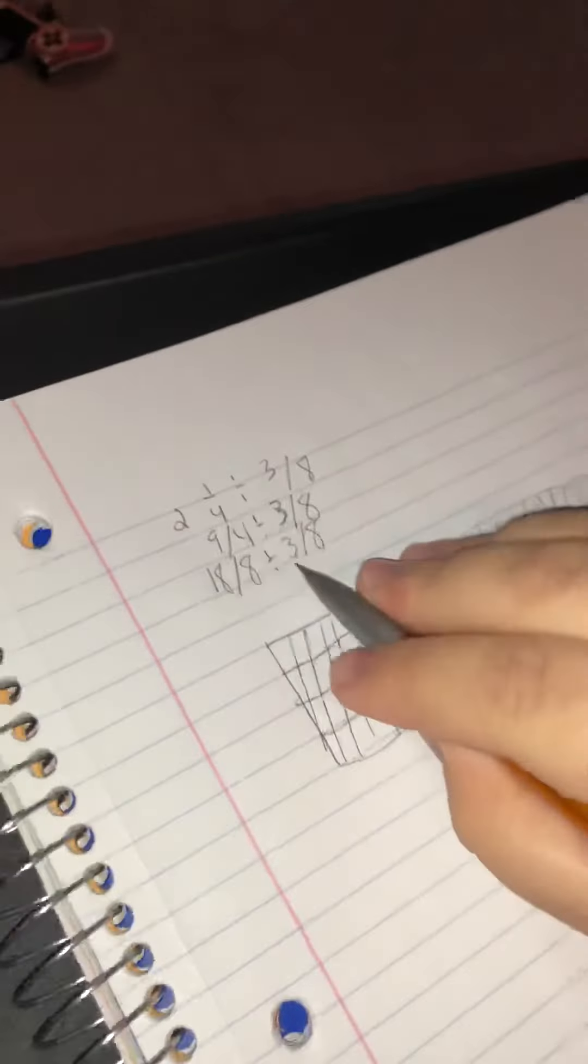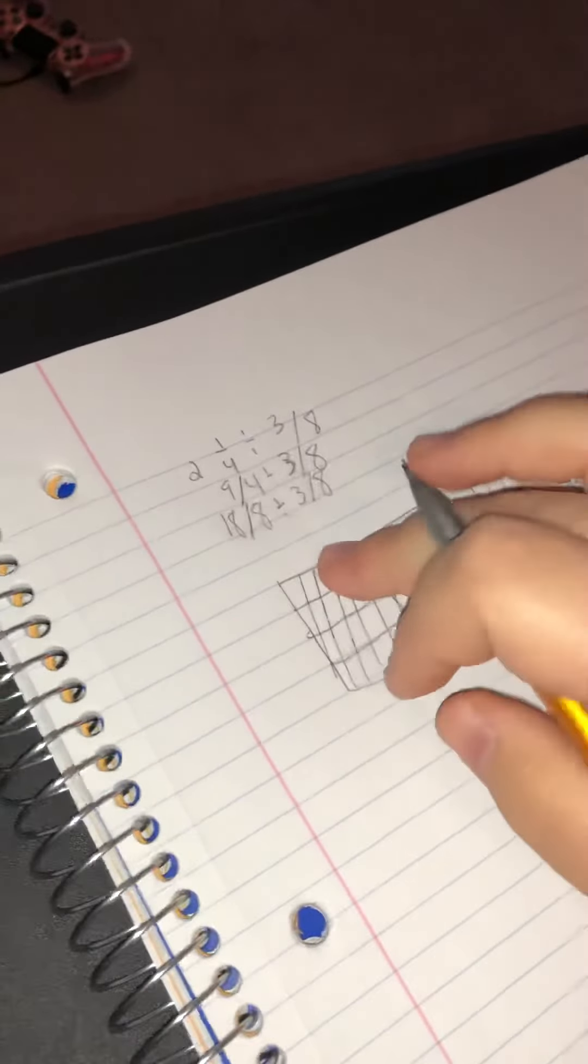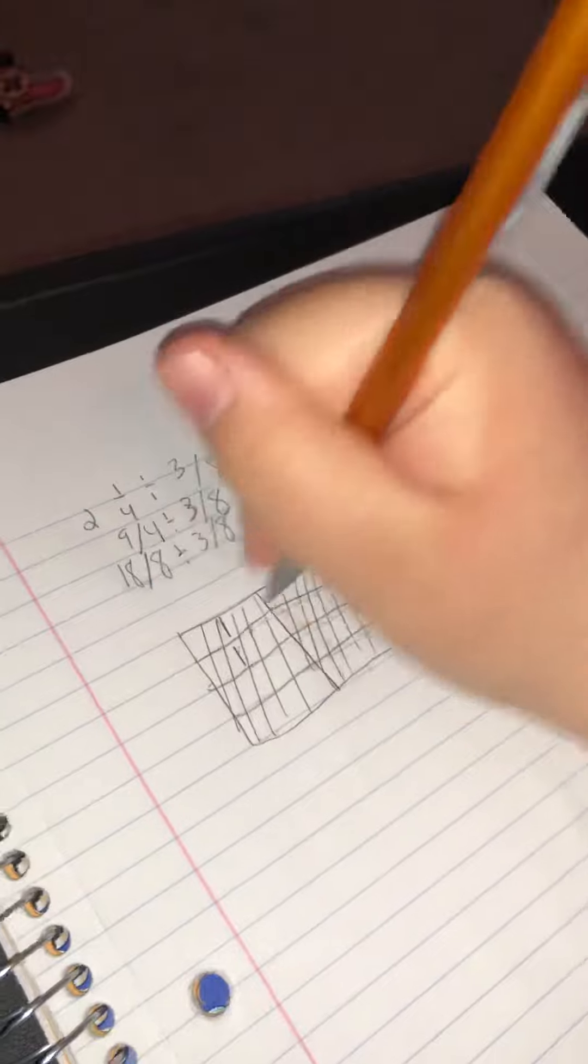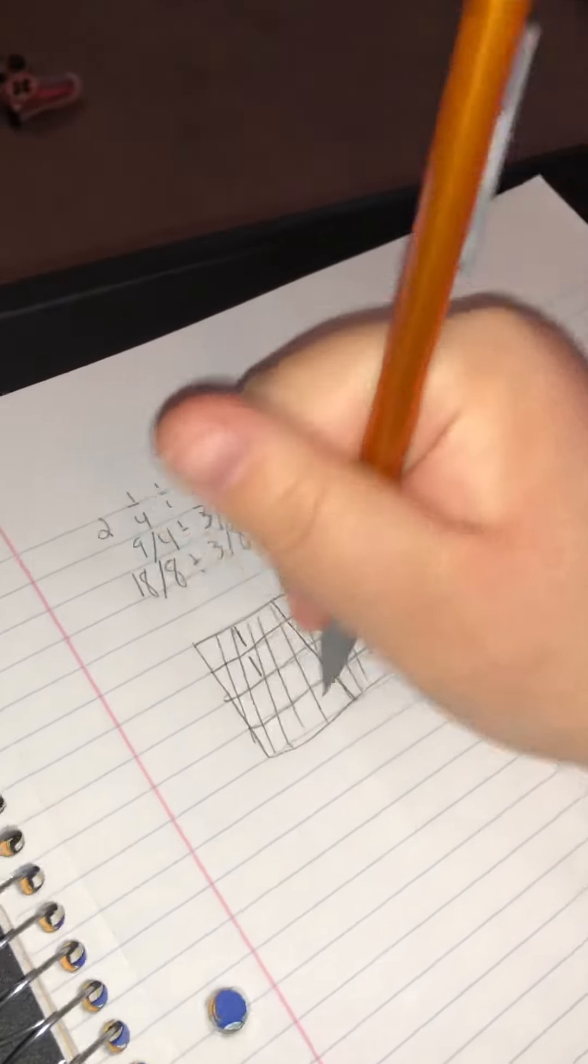Alright, so now what we're going to do is we're going to make groups of 3/8. So 3 of these boxes, or each of these boxes represents 1/8. So 1 group is going to be equal to 3 of these boxes. So what I like to do is I like to number them. 1, 1, 1. So there's group number 1.